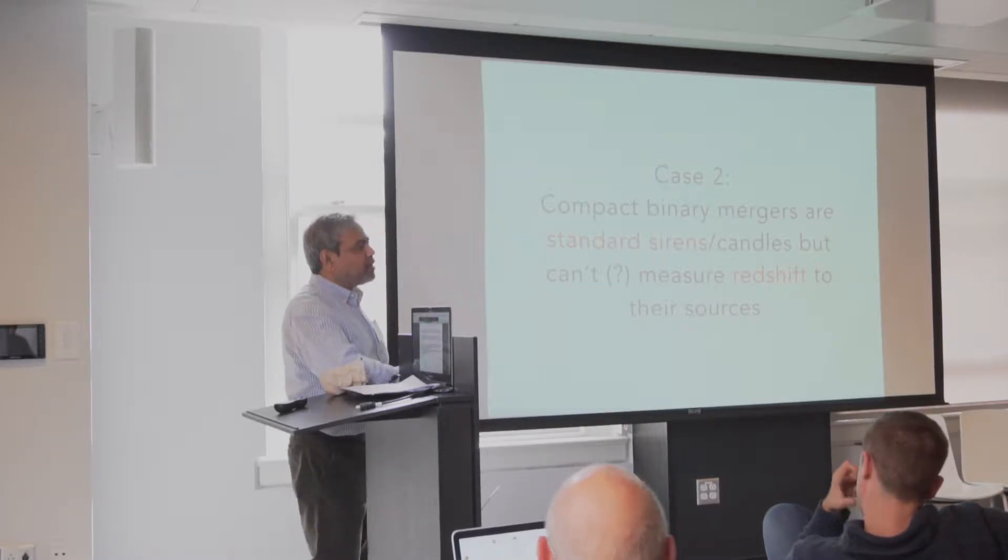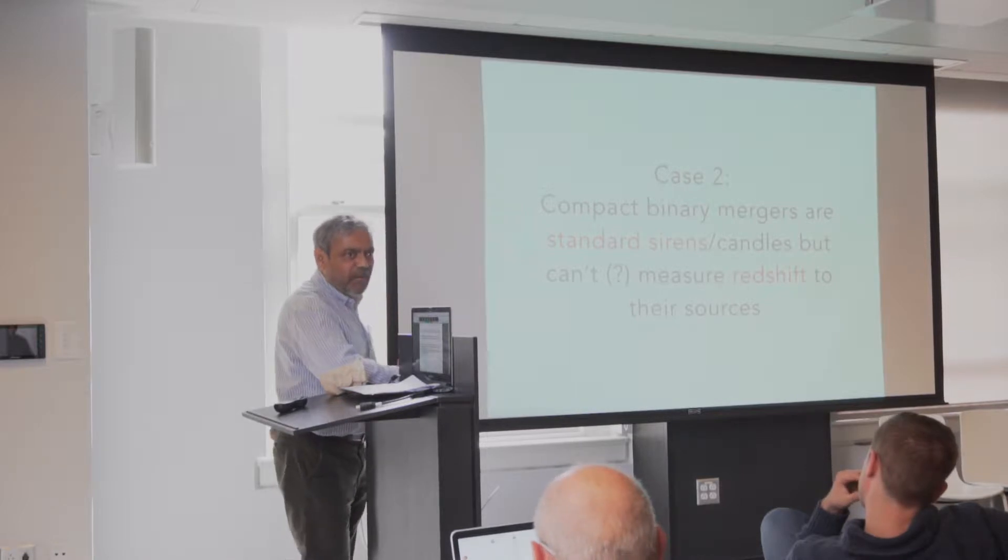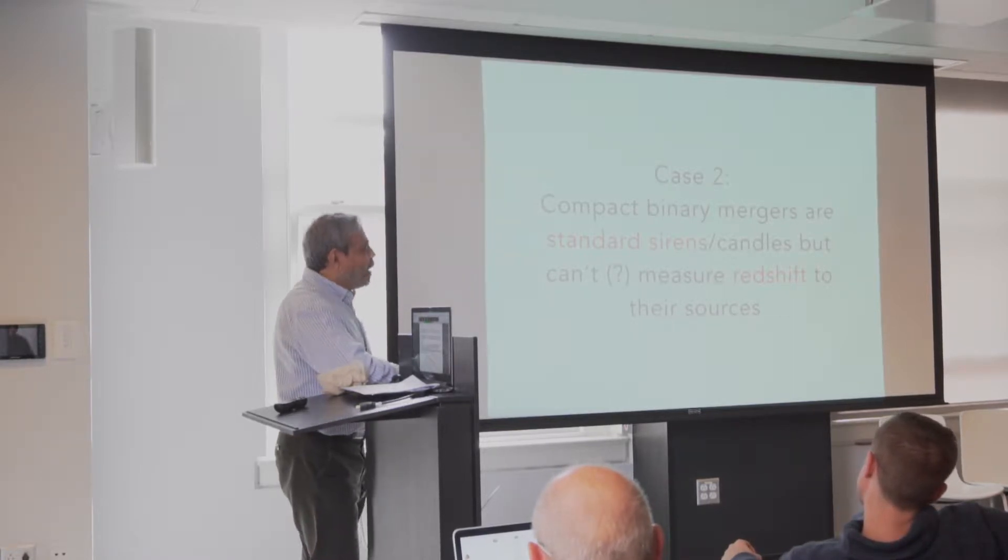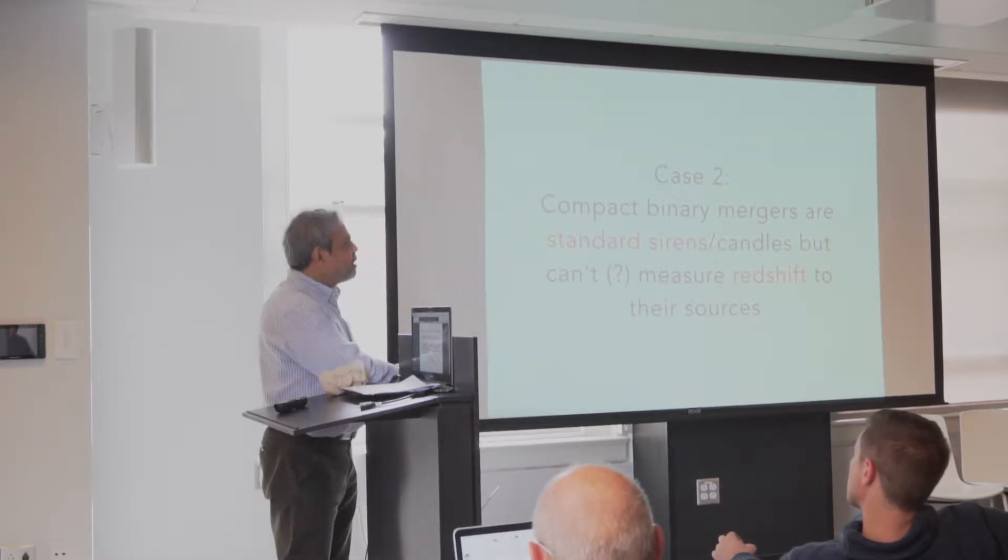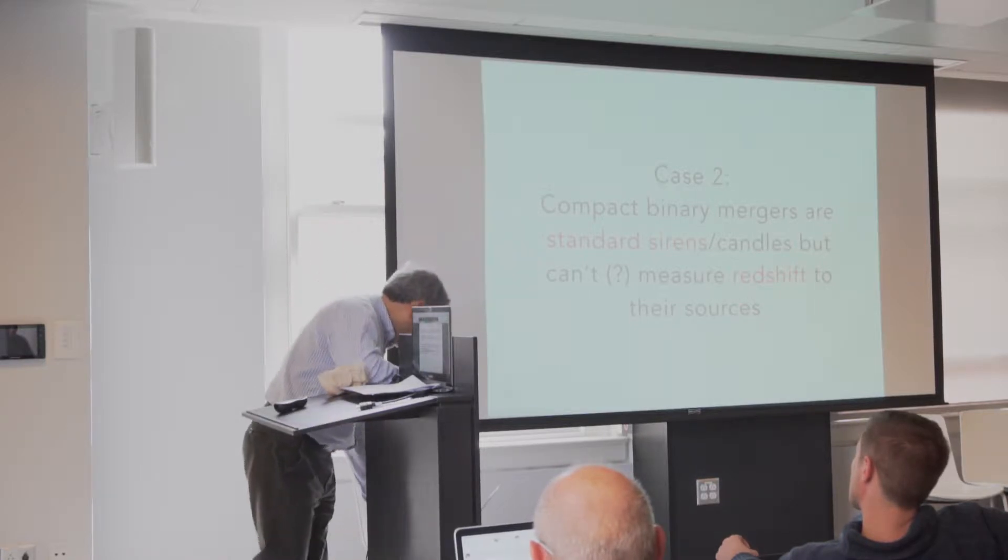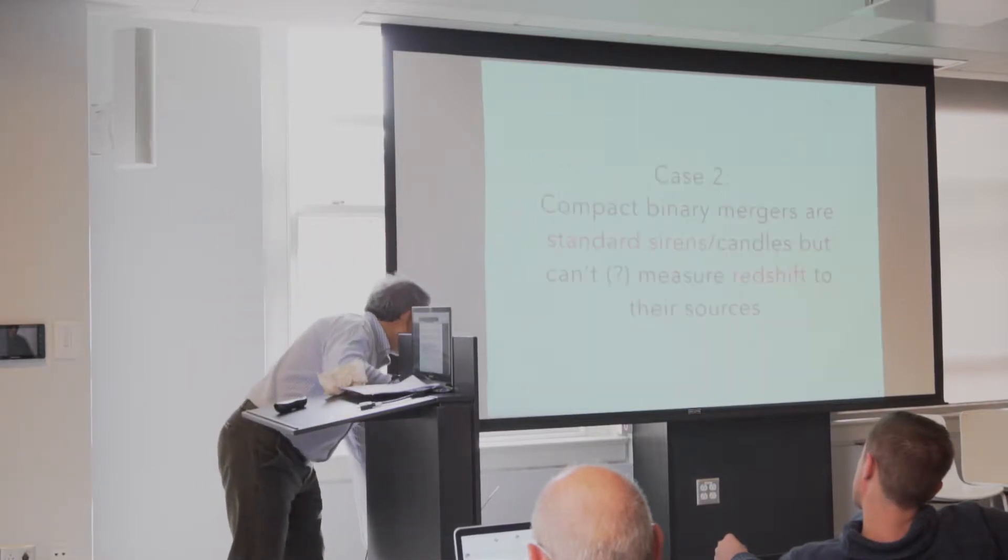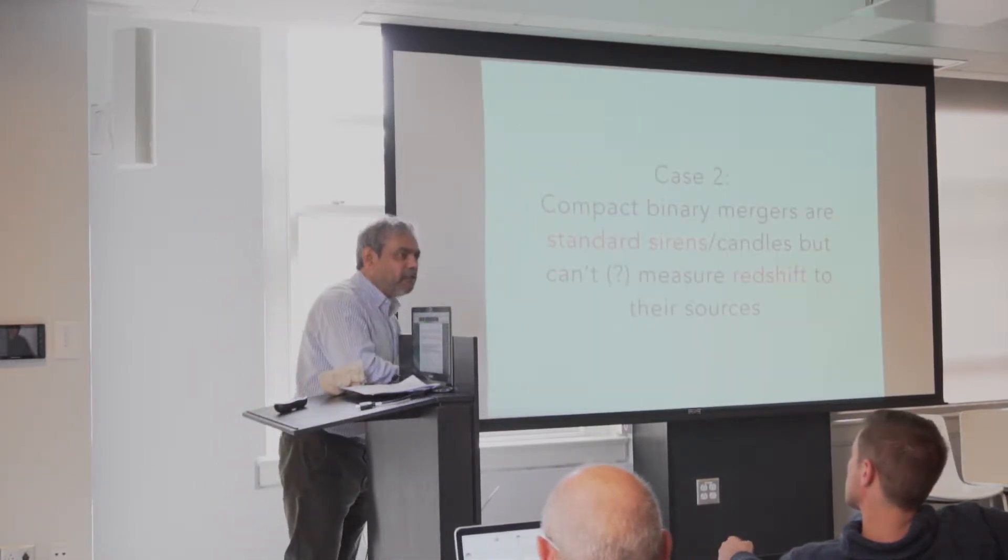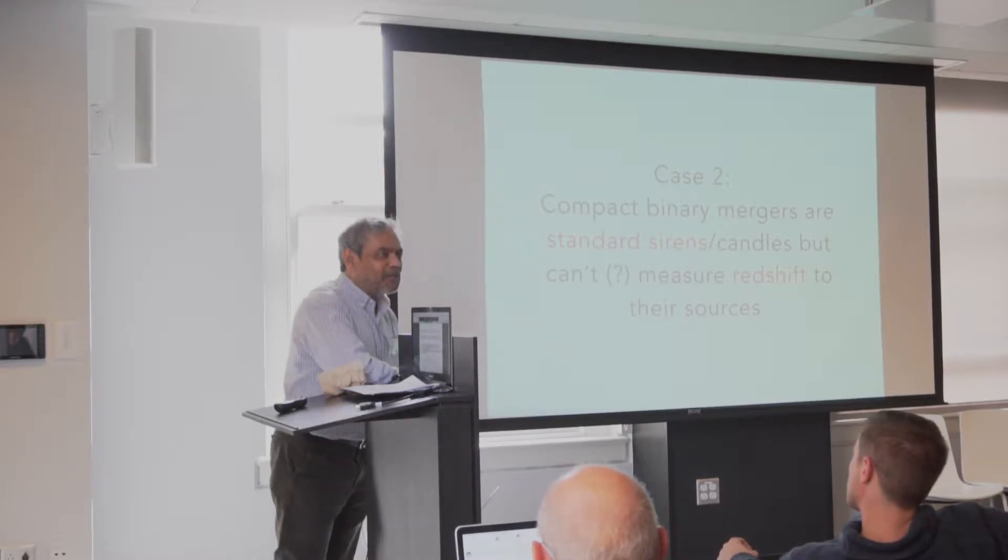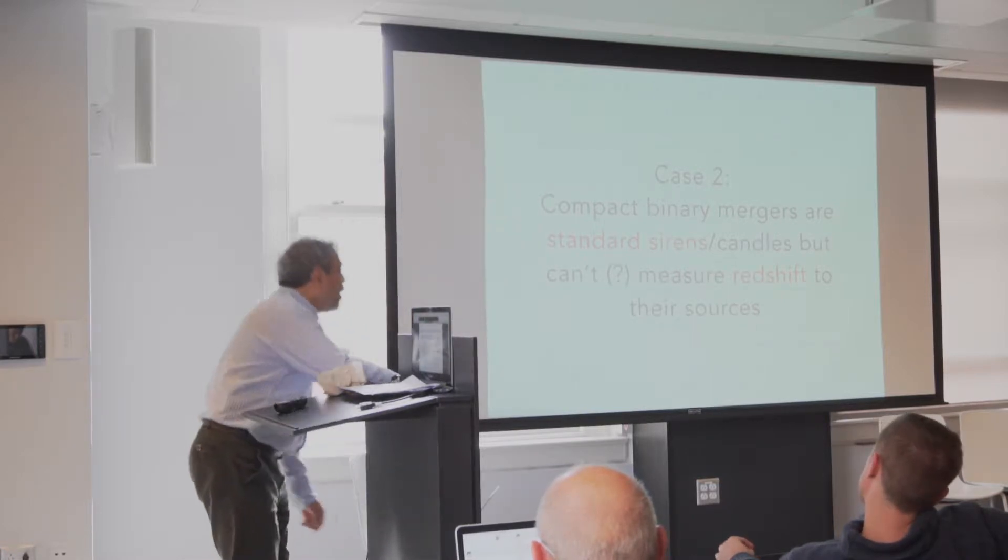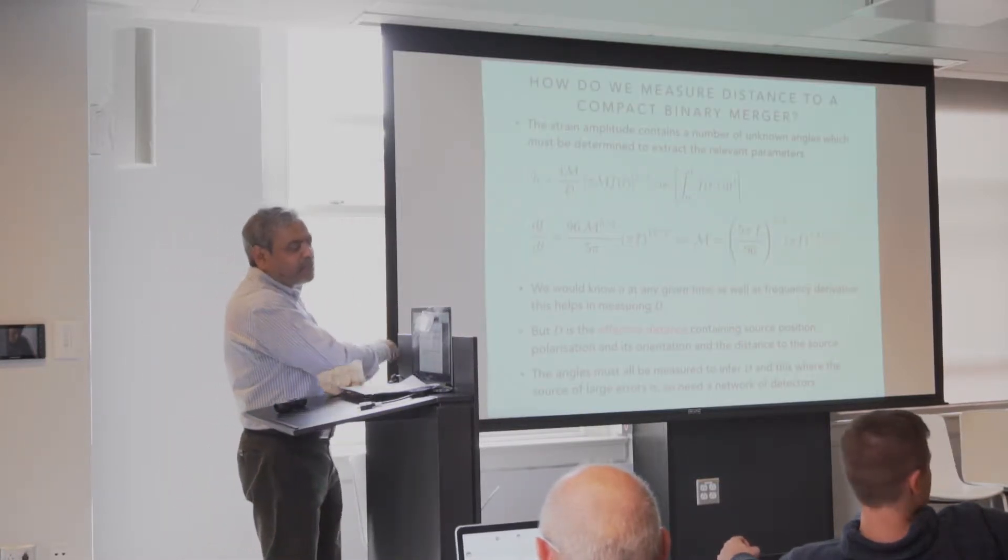And compact binary mergers are standard sirens. It is a well-established theoretical aspect, and I'll show you how that is. But even when we can measure the distance to the sources, we can't measure the redshift, especially if they are binary black holes. I put a question mark here because if they are binary neutron stars, gravitational wave observations alone might be able to tell you redshift, but probably not very well. So why are these standard sirens?